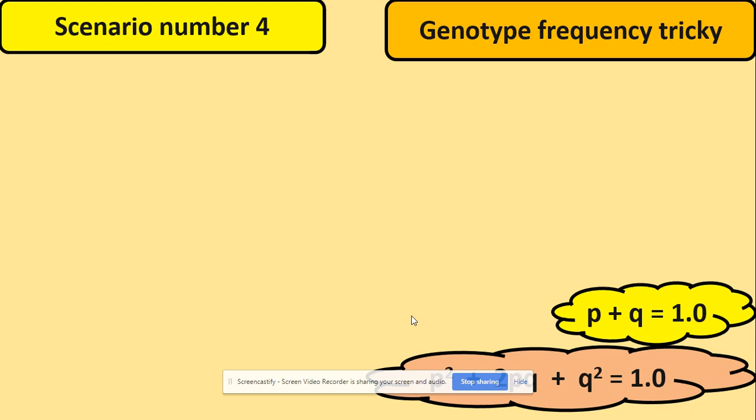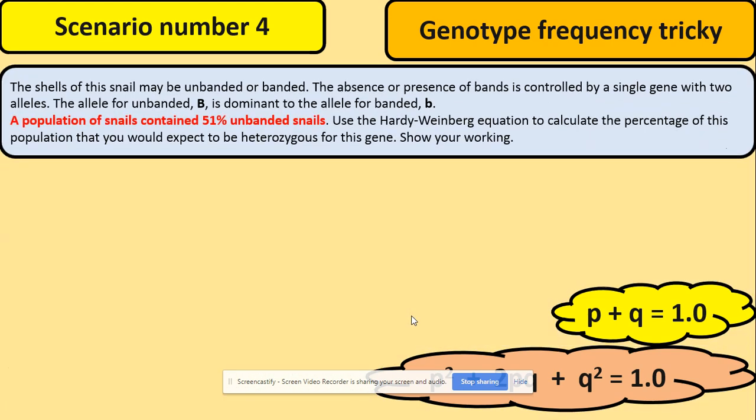So let's have a look at one more scenario when they would like you to work out the genotype frequency but it's a bit of a tricky question. We've got the shells of this snail might be unbanded or banded and the absence or presence is affected by specific alleles. The unbanded is dominant and banded is recessive. And they told you that the population of snails contains 51% unbanded.